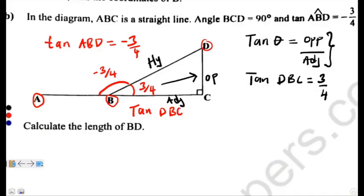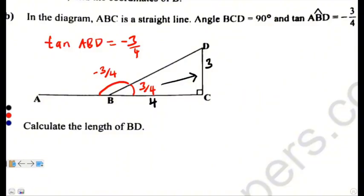So, since we have identified that 3 is the opposite, so right here, on the opposite, it's a 3. Then, right here, on the adjacent, it's a 4.